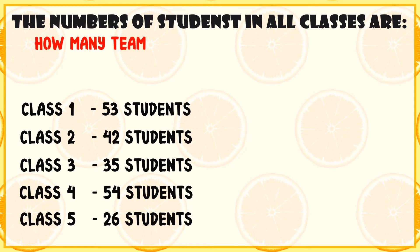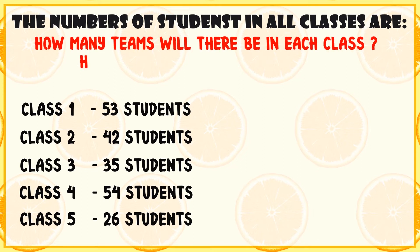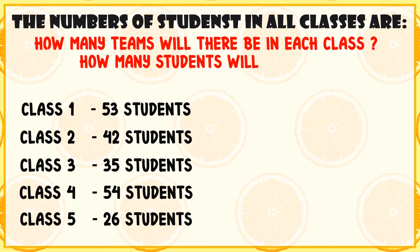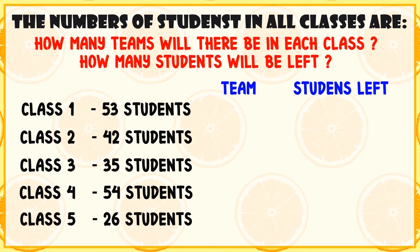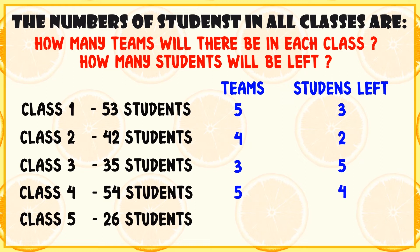How many teams will there be in each class and how many students will be left? Class 1 has 5 teams and 3 students left. Class 2 has 4 teams and 2 students left. Class 3 has 3 teams and 5 students left. Class 4 has 5 teams and 4 students left. Class 5 has 2 teams and 6 students left.